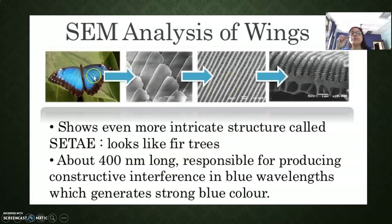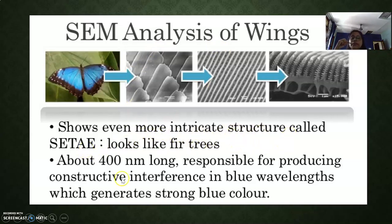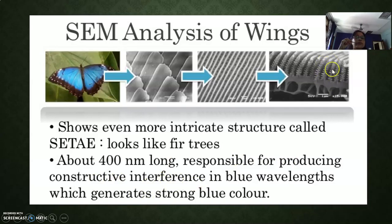The butterfly also has intricate structures called setae in its wings, similar to those of lizards, and they look like pine trees. These structures are about 400 nanometers long and are responsible for producing constructive interference — meaning the addition of light. When light falls on these structures, the reflected light adds up and produces the different types of colors seen in butterfly wings.